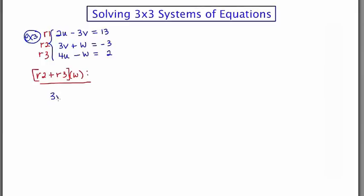I'm sort of documenting that with this notation here. So we have 3v plus w is equal to negative 3, that's my row 2. Now, my row 3 is 4u minus w, and that equals 2. So if I add right now, the w's cancel out, and I'm left with 3v plus 4u is equal to negative 1. So I'm left with an equation in both v and u.